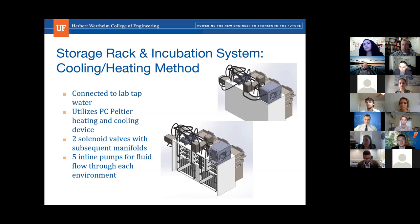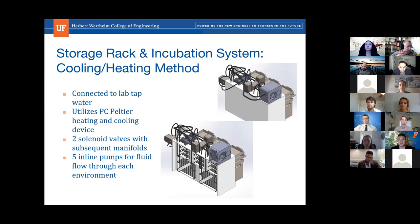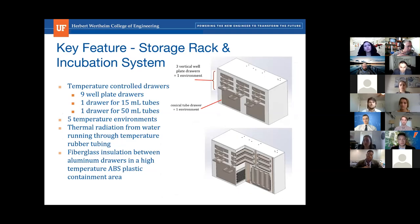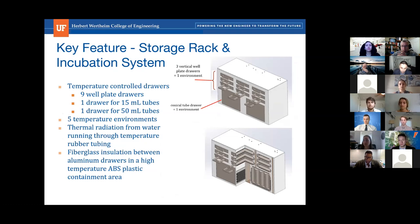A chat question asks how the isolation of each chamber is managed so one chamber's temperature doesn't impact others. The answer comes down to material selection and shelving design: fiberglass insulation between drawers minimizes heat dissipation between environments, aluminum drawers provide high conductivity to maintain temperature, and the high-temperature ABS plastic containment area prevents damage at elevated temperatures and is manufacturable via 3D printing.